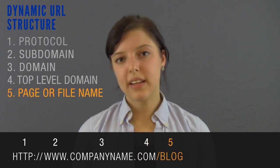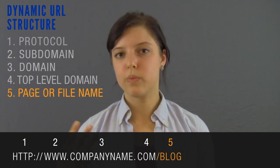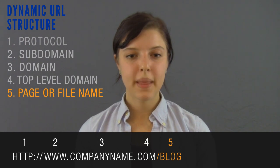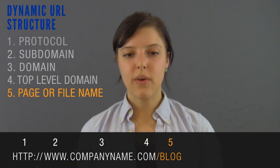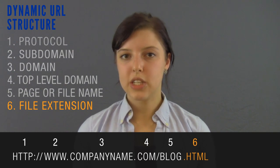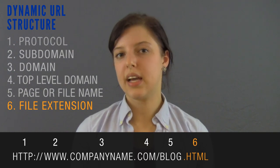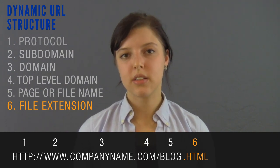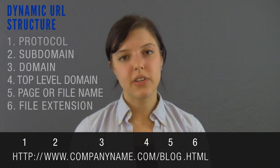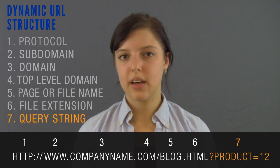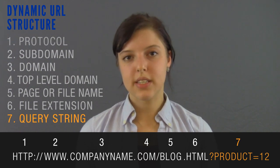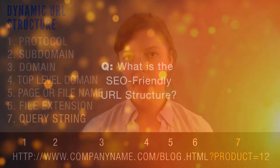Then you have your page or file name, so dot com slash blog or slash subfolder. After that you have the file extension, so it could be dot PHP, dot HTML, whatever you're using to code that. And then you have your CGI parameters, which could be a pound sign, hashtag, or a series of numbers to kind of lock it all down in place.